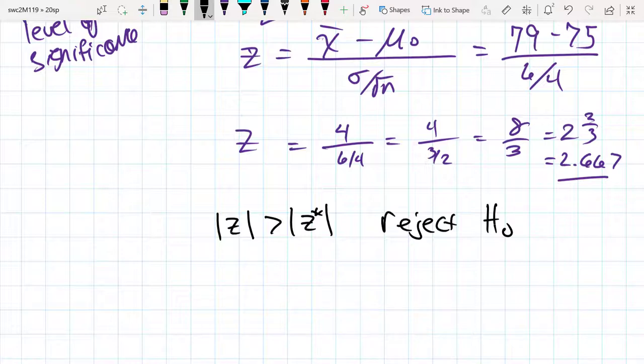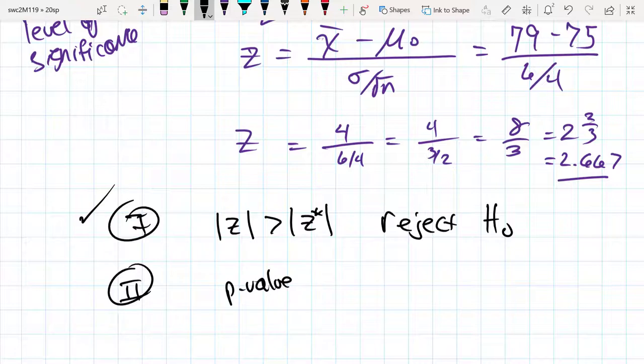The other way that we want to consider this is to figure out what the p-value is. We have two different ways of coming up with this answer. Either one is fine, but usually one is a little bit easier. The other one is to look at the p-value.